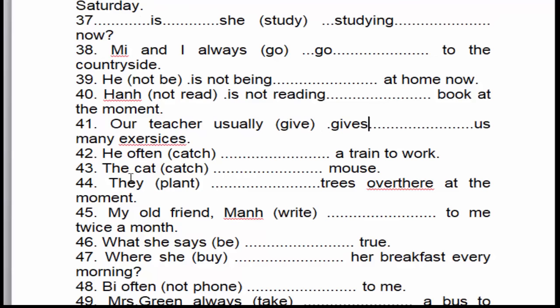Câu số 42: 'He often catches the train to work.' Anh ấy thường đón tàu đi làm việc. 'Often' là dấu hiệu nhận biết của thì hiện tại đơn. 'He' là chủ ngữ số ít, cho nên động từ 'catch' chúng ta thêm 'es' → 'catches'.